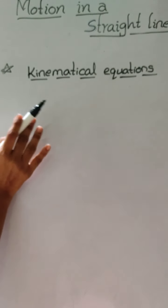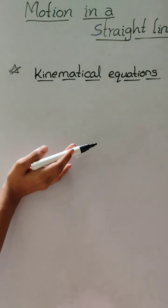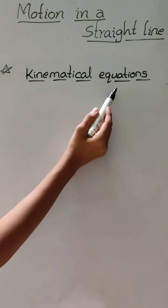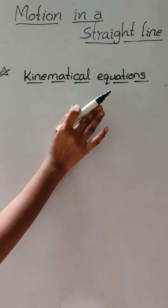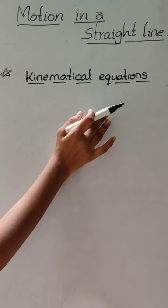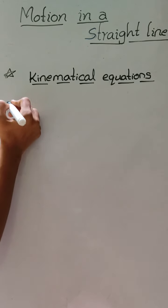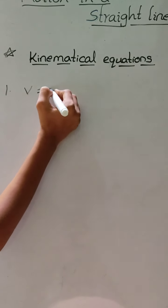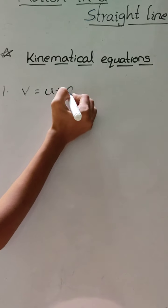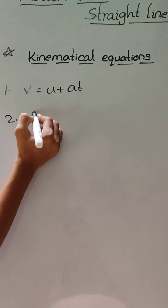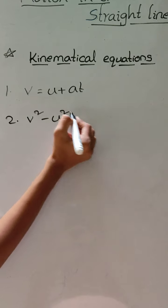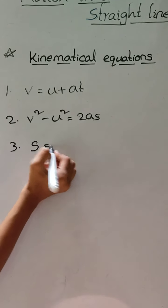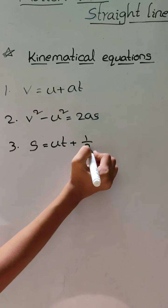Now we are seeing the most important formulas in this chapter — motion in a straight line — that is, the kinematical equations. There are three main equations that are very useful in solving problems. First: V is equal to U plus AT. Second: V square minus U square is equal to 2AS. Third: S is equal to UT plus half AT square.